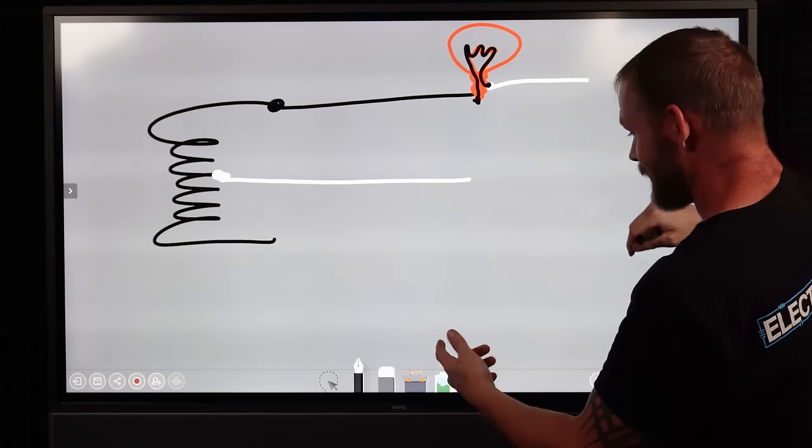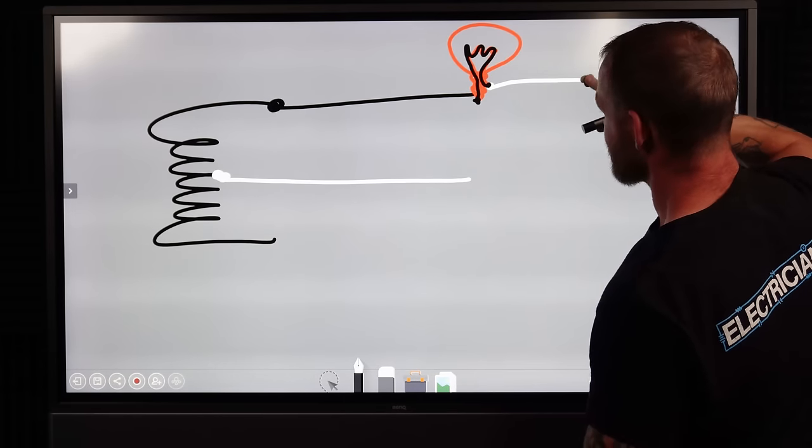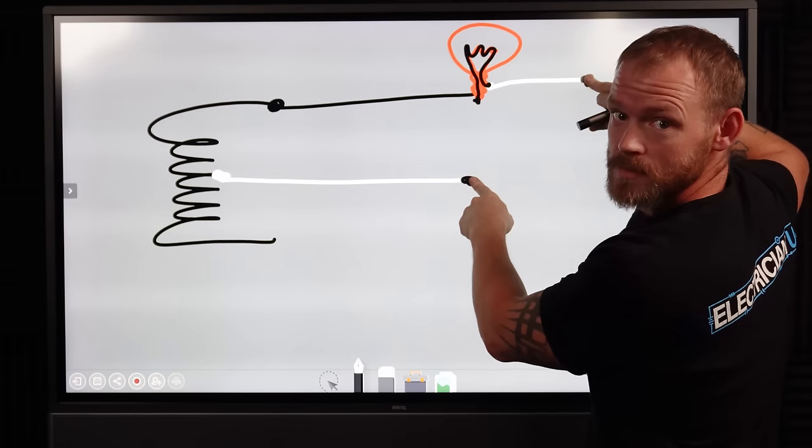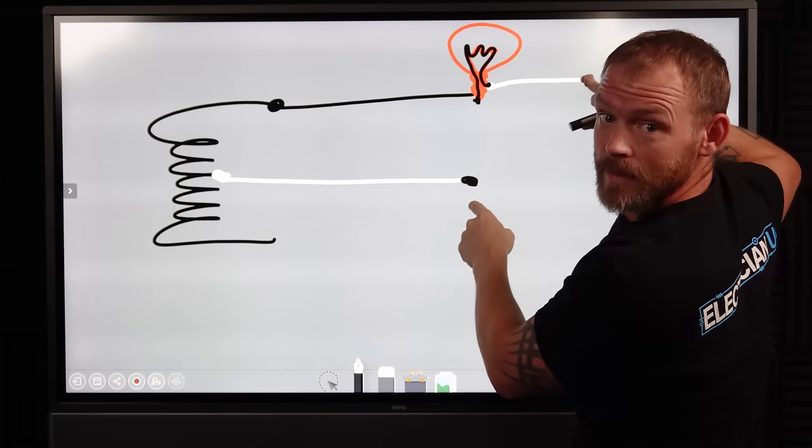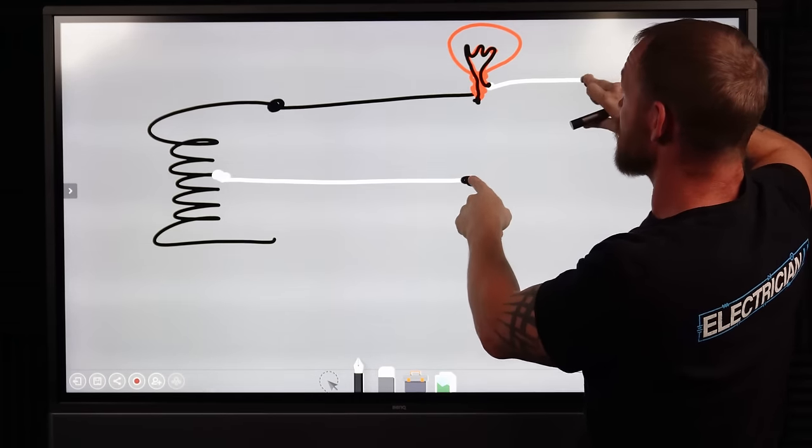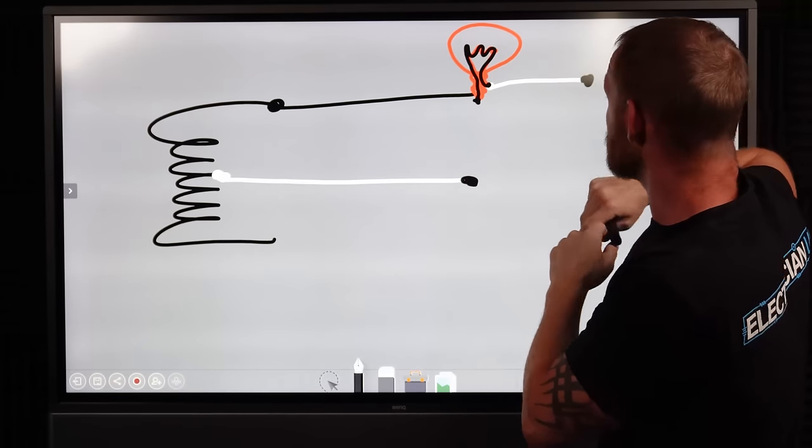So if you were to stand in the middle of this and touch this and touch this, yeah, you're going to get shocked. You're completing a loop. Current's able to travel through you. You're going to let that light bulb turn on too, probably.